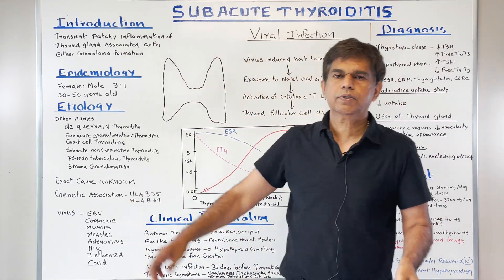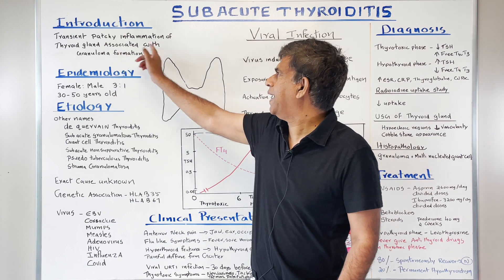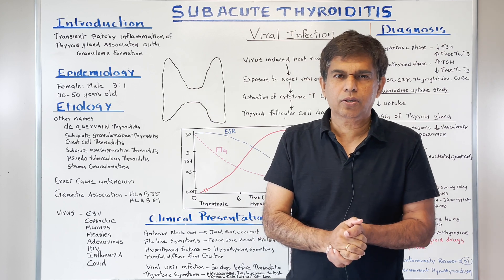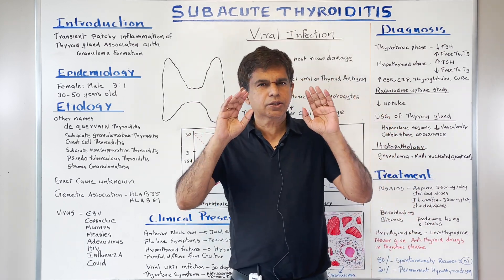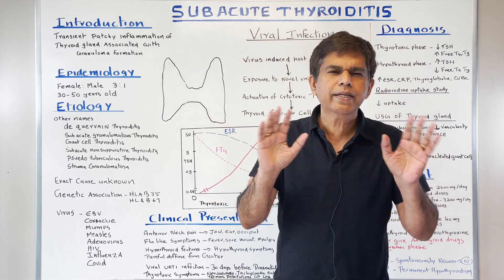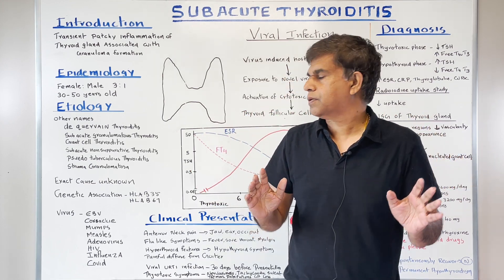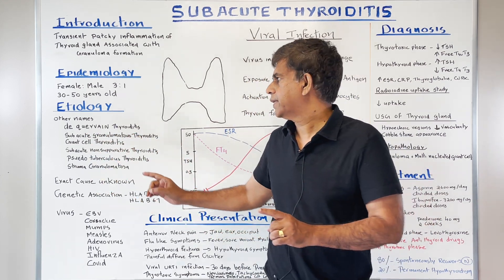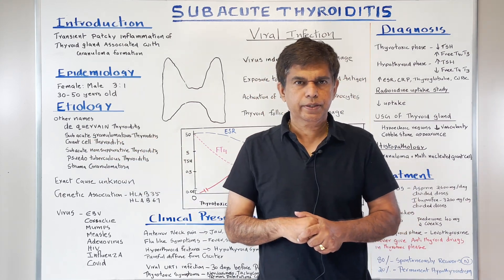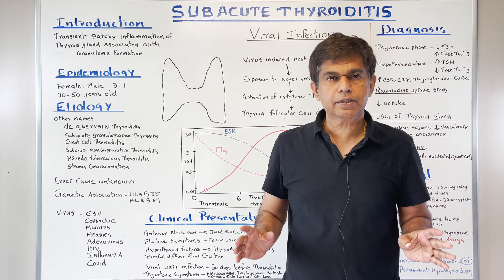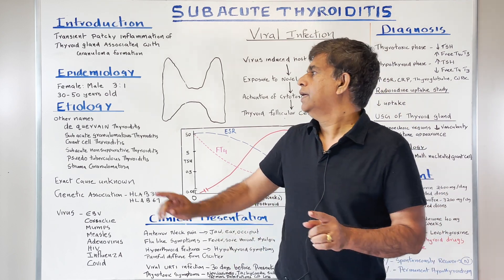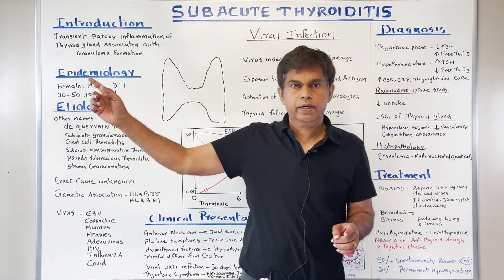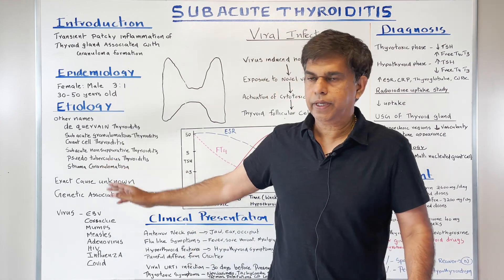The topic is subacute thyroiditis. The first key finding is transient patchy inflammation of the thyroid gland associated with granuloma — remember that word. There are many terms used to describe this disease. The two most important ones you need to know are: de Quervain's thyroiditis and subacute granulomatous thyroiditis. They all refer to the same condition — subacute thyroiditis — so don't get confused.